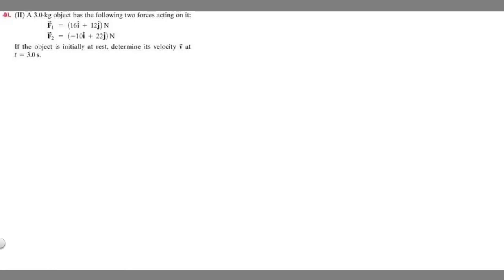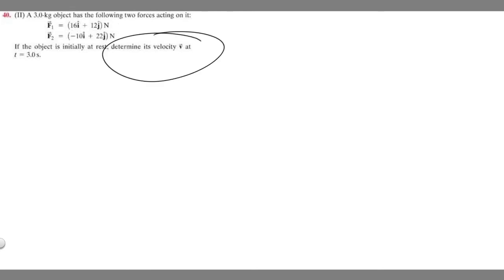In this problem, we're told a 3 kg object has the following two forces acting on it. F sub 1 is 16i plus 12j newtons, and F sub 2 is minus 10i plus 22j newtons. If the object is initially at rest, determine its velocity v at t equals 3 seconds.